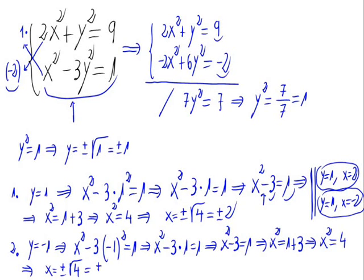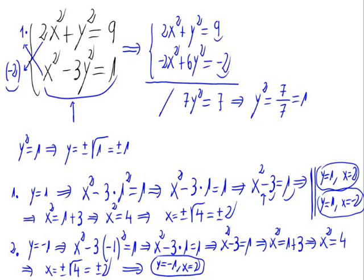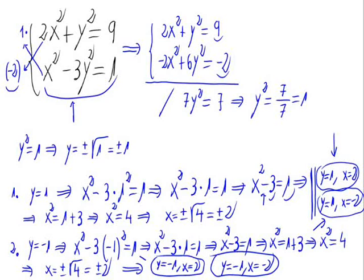Again, we have two solutions for the same value of y. For y equal to minus 1, x equals 2 or x equals minus 2. So in total, we have four solutions for our system: two for y equal to 1, and two for y equal to minus 1.